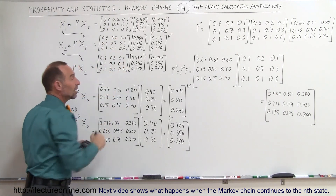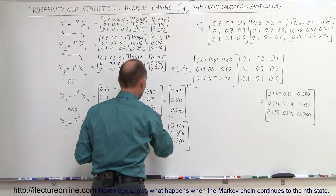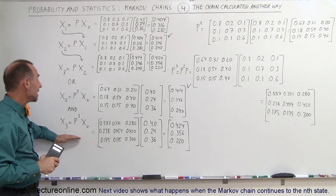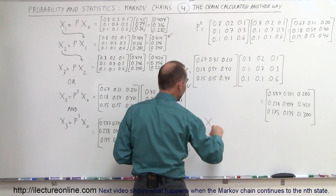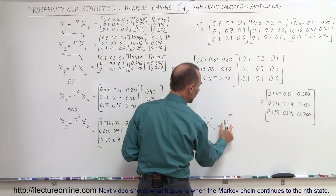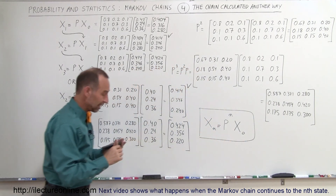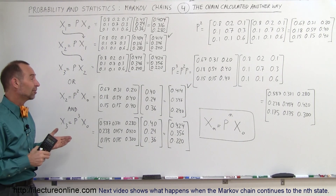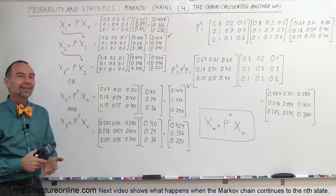So there are two methods for finding any state in a Markov chain. To generalize: x sub n, the nth state, equals the probability matrix raised to the nth power times the initial state. That's what we learned in this video — you can find results using the Markov chain one step at a time, or simply raise the probability matrix to the n power and multiply by the initial state to get the nth state directly.